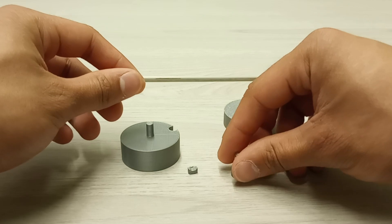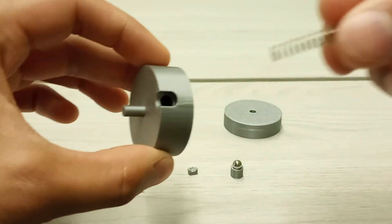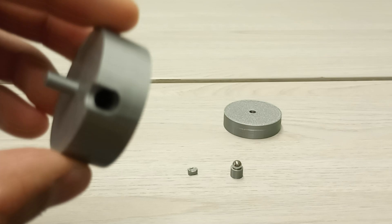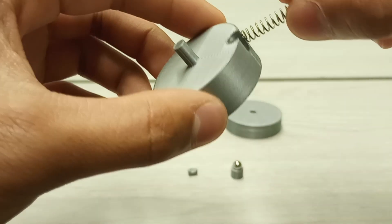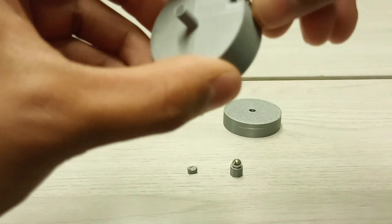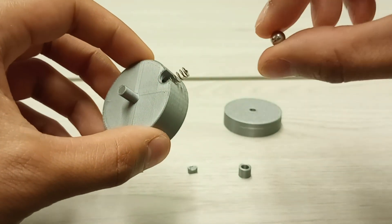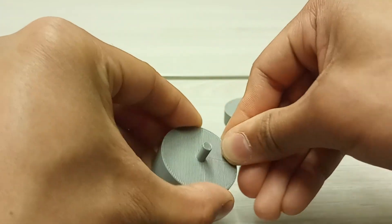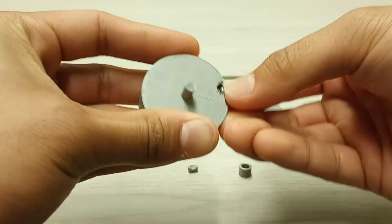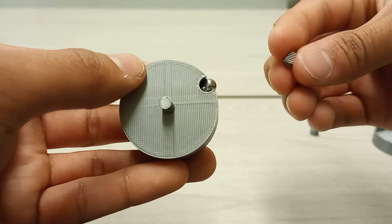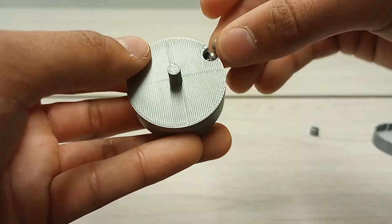So how I assemble this is I simply put this spring right into this hole, and following it I put this steel ball in there. Then I lock the steel ball in place with this small little piece right here.